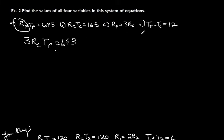So now we need to replace RC or TP. TP needs to be, this equation needs to be rearranged to get TP by itself. So it's 12 minus TC. So 3RC, TP is 12 minus TC, equals 693.